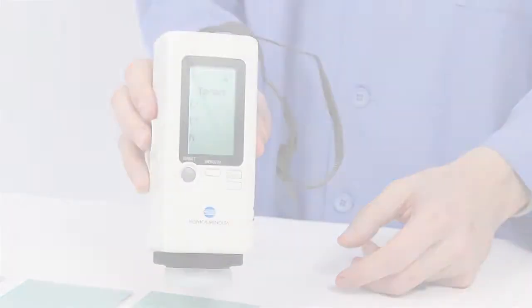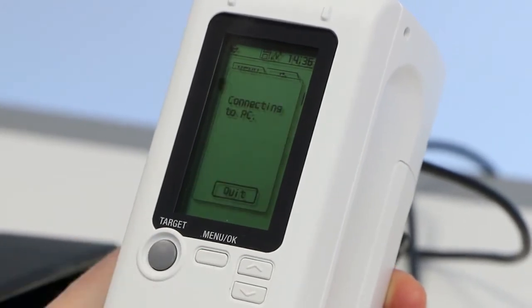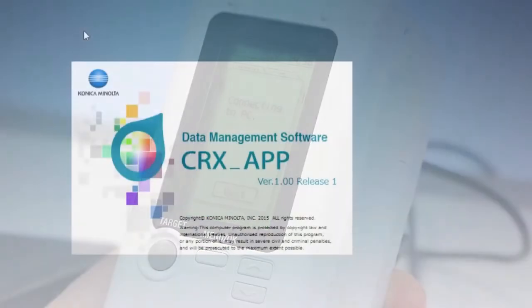To set up custom pass and fail judgments, first connect the instrument to a PC, then enter three separate tolerance settings in the included utility software.